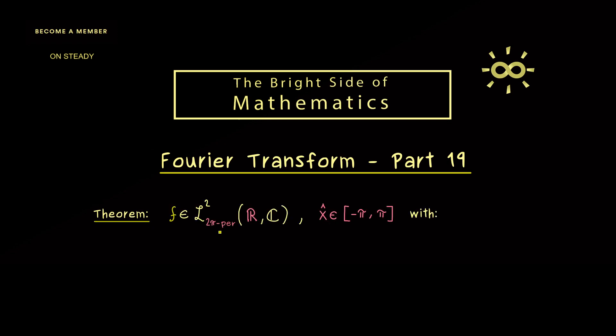So for a given L2 function which is also 2π periodic we fix a point x hat in our interval from minus π to π. For example we could choose x hat as the origin and then f could look like this. And there you already see we don't need to be continuous at the point x hat but some limits need to exist.